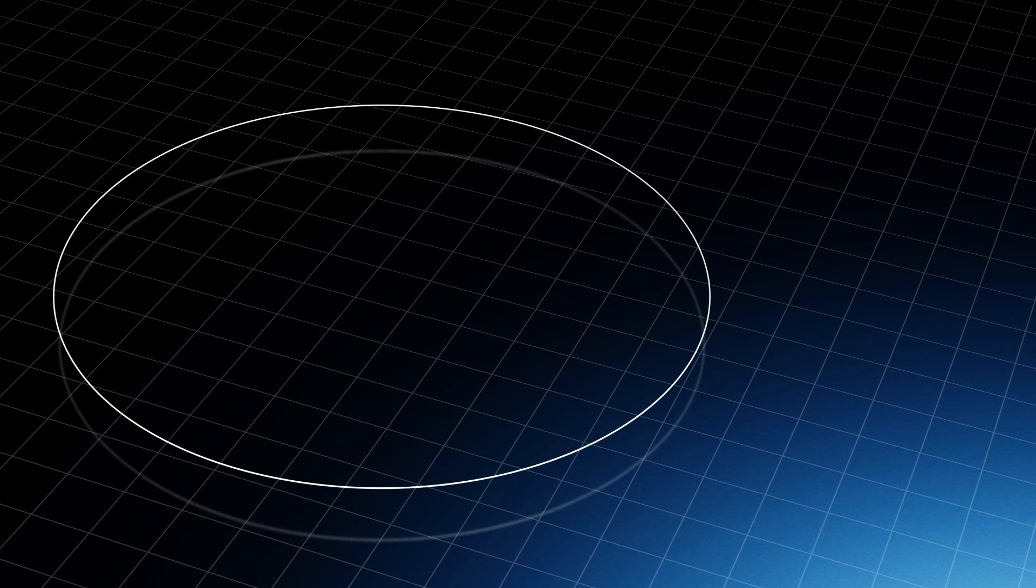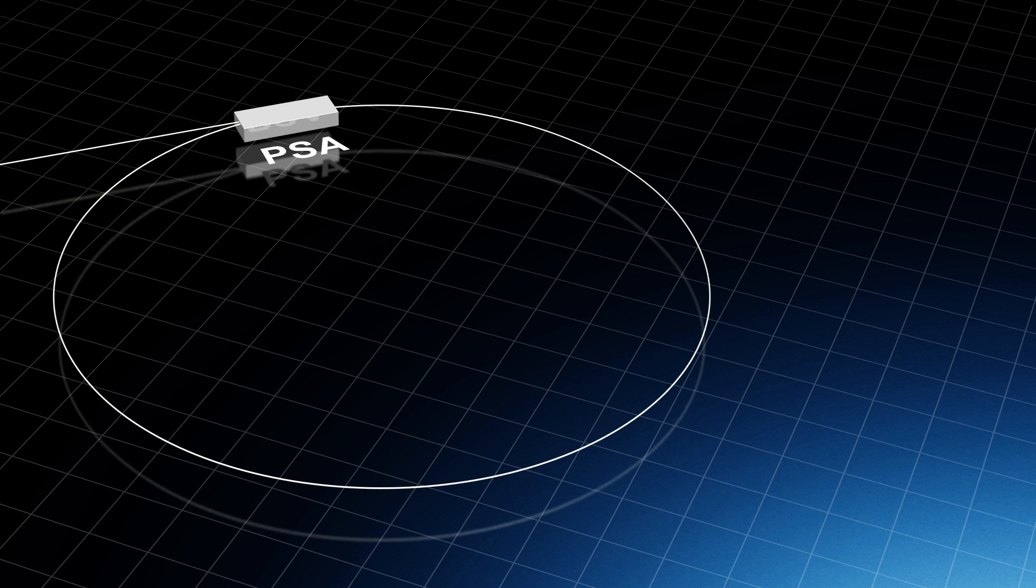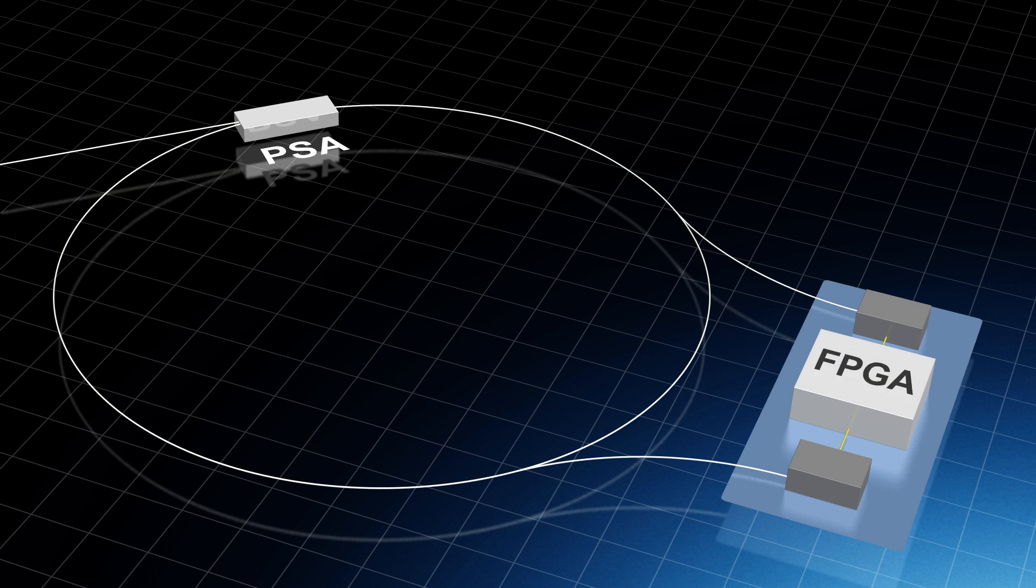Its basic structure is simple. There are just three main components – an optical fiber loop, a special optical amplifier called a PSA, and an electronic circuit called an FPGA.